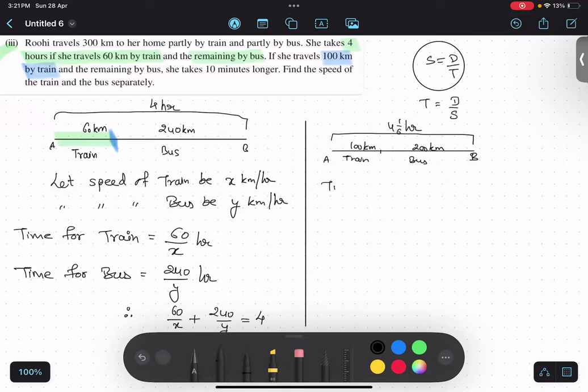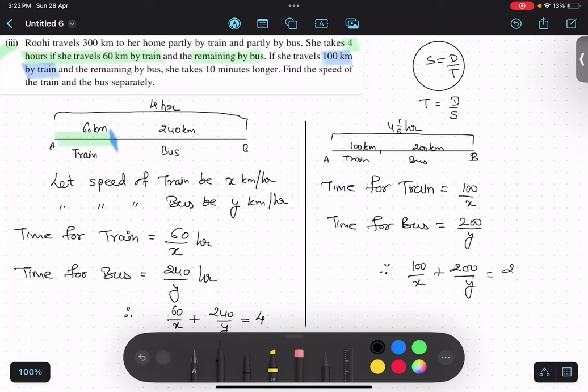So time for train, what will be the time for train? 100 upon x. Time for bus: 200 upon y. Therefore, 100 upon x plus 200 upon y equals to, you can write over here, 25 by 6. Is that thing clear? Yes.